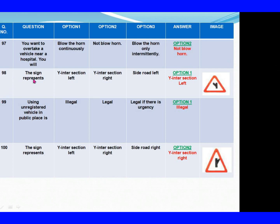Question 98: The sign represents. Option 1: Y intersection left. Option 2: Y intersection right. Question 99: Using an unregistered vehicle in a public place is. Option 1: Illegal. Option 2: Legal. Option 3: Legal if there is urgency. The right answer is Option 1: Illegal.